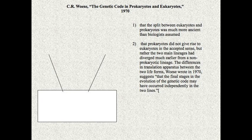Woese changes that already in 1970, before he begins the sequencing work. He writes a book called The Genetic Code — it comes out the same year as Watson's book. The difference is Woese's book is steeped in evolution. In 1970, he writes a paper, 'The Genetic Code and Prokaryotes and Eukaryotes,' and argues that the split between eukaryotes and prokaryotes was much more ancient than biologists had assumed, and that prokaryotes did not give rise to eukaryotes in the accepted sense, but were two main lineages that had diverged much earlier from a non-prokaryotic lineage.